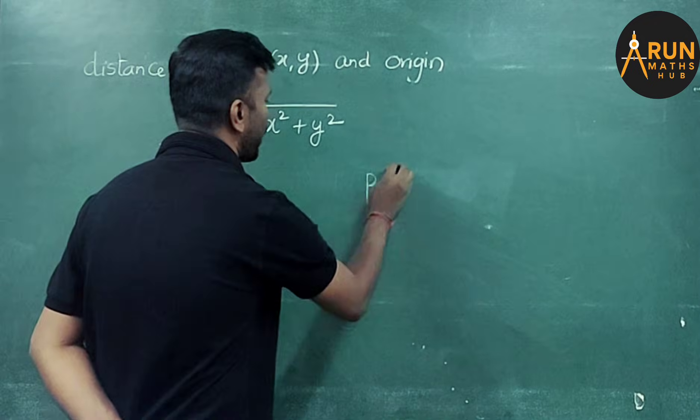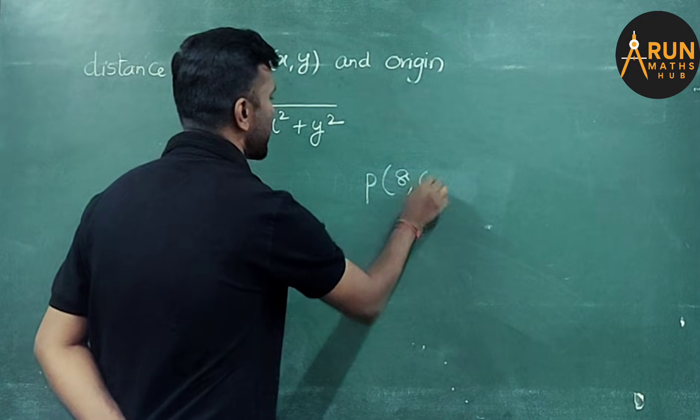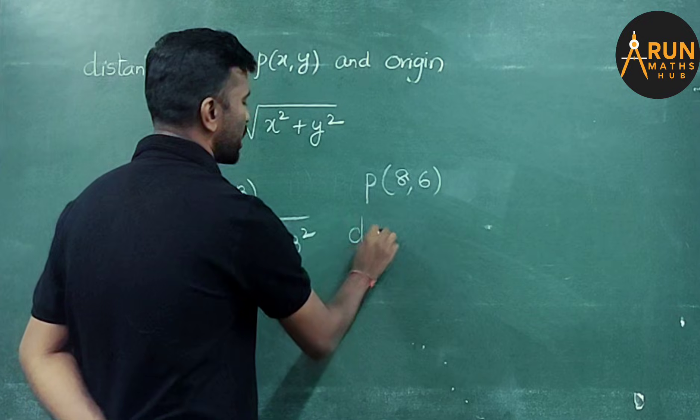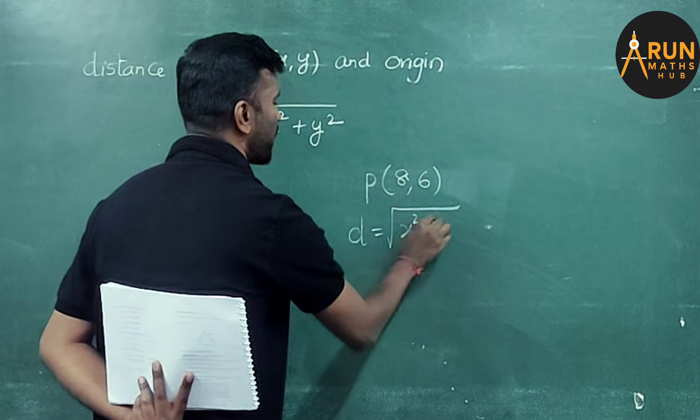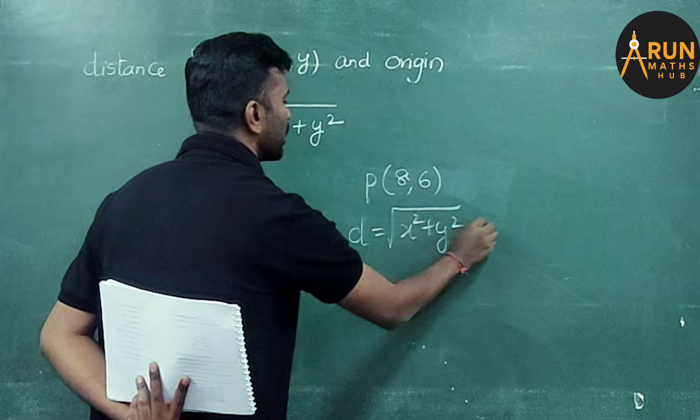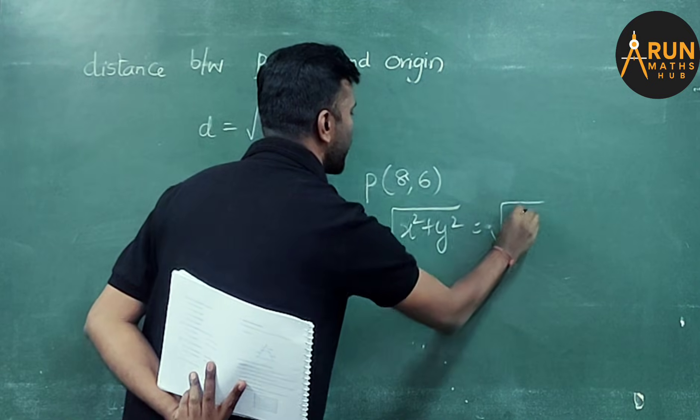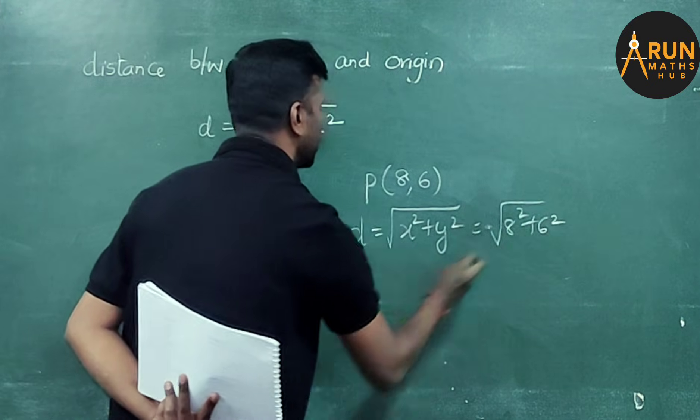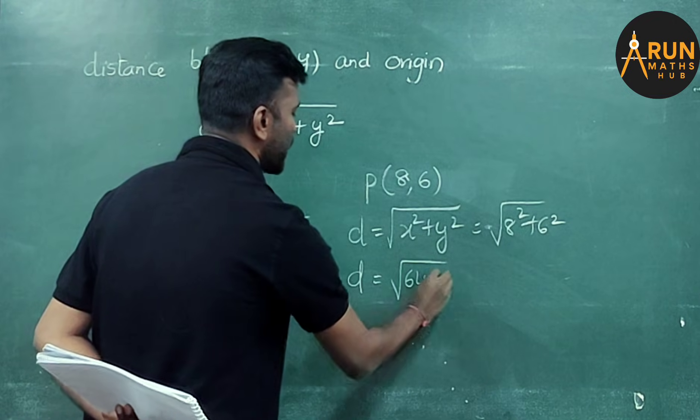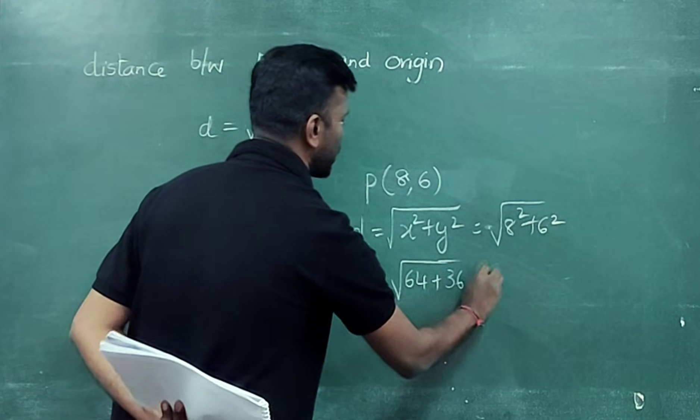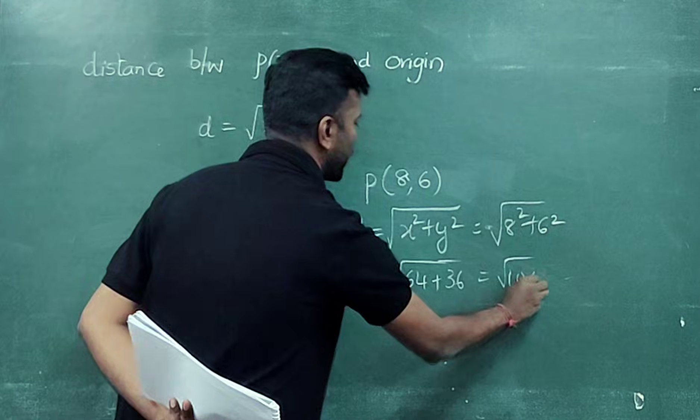If they ask P of 8 comma 6, what is the distance between origin and this point? d equals square root of x square plus y square. 8 square plus 6 square. d equals square root of 64 plus 36.